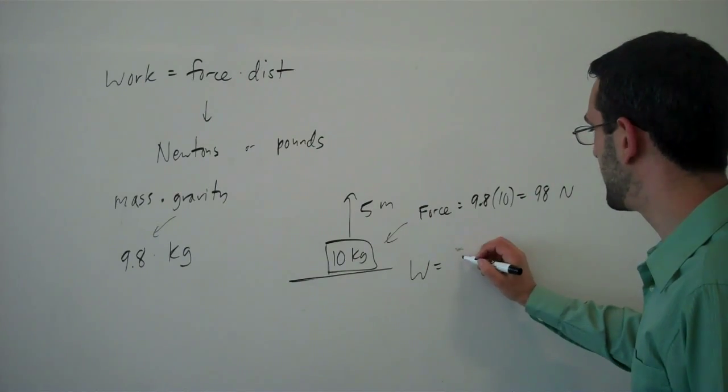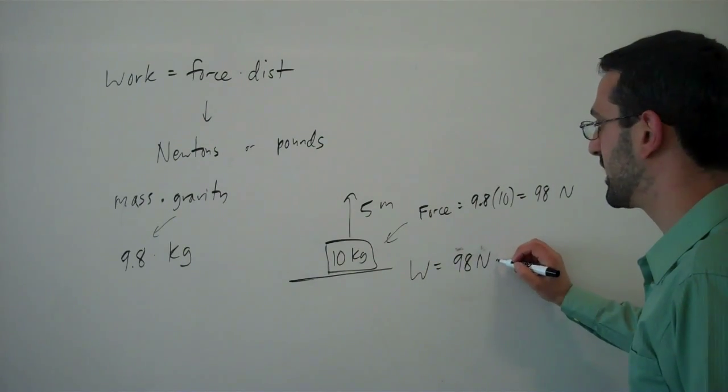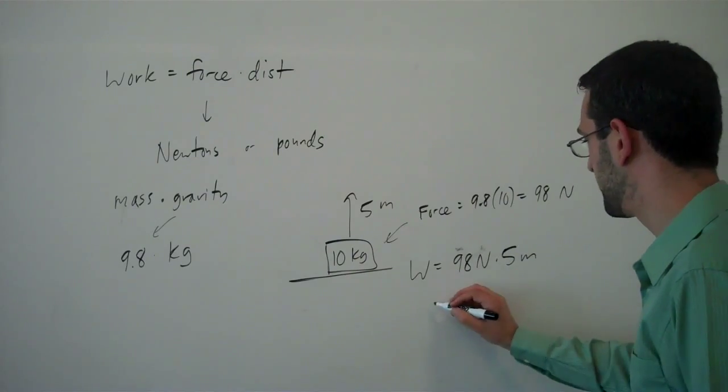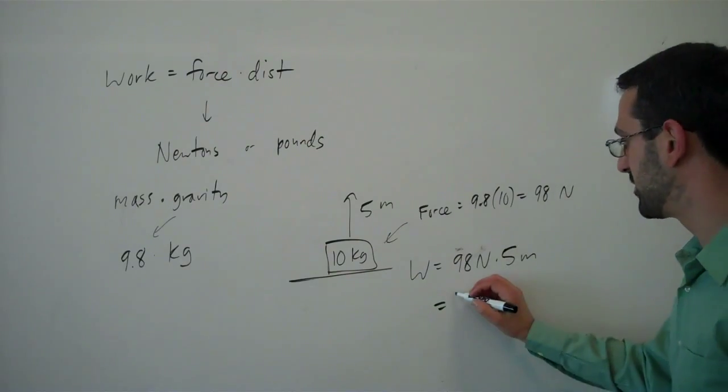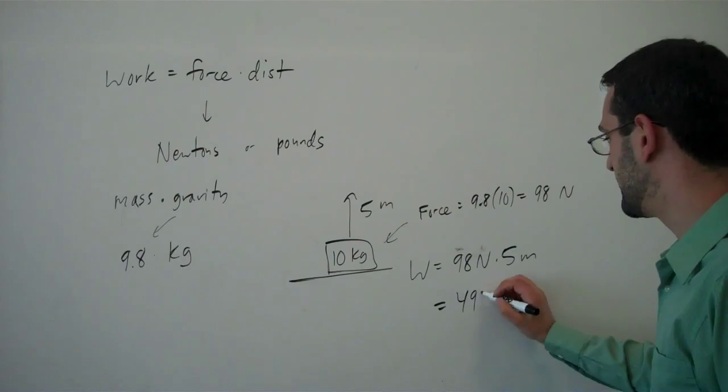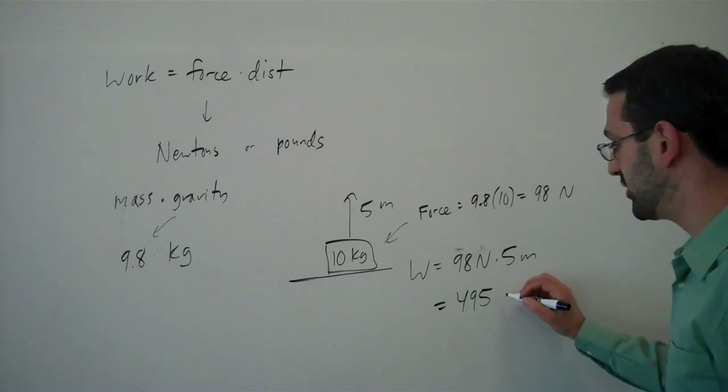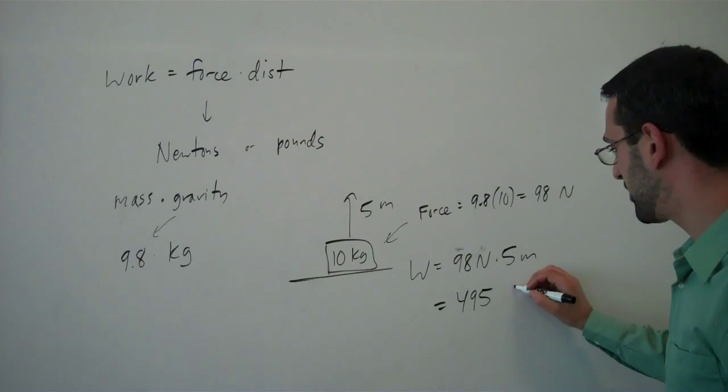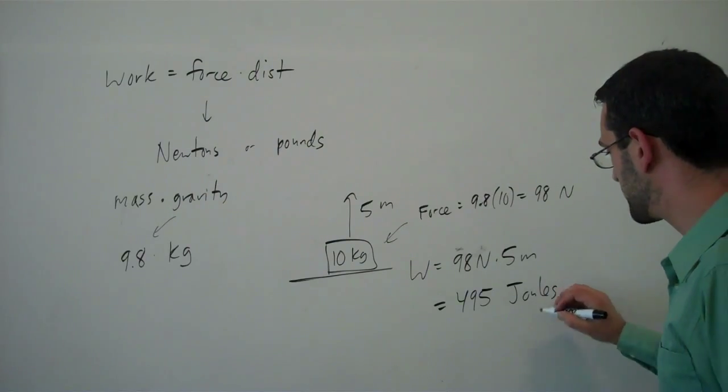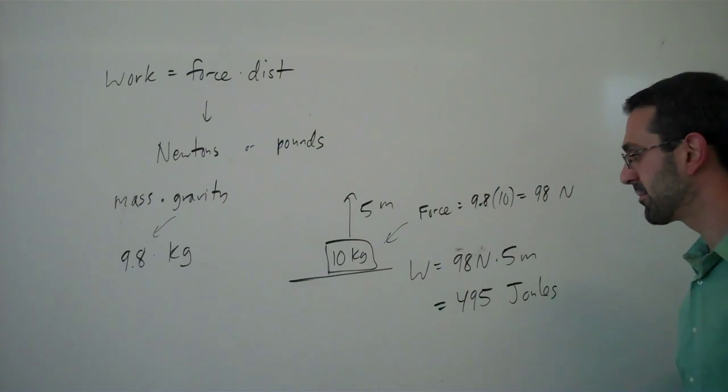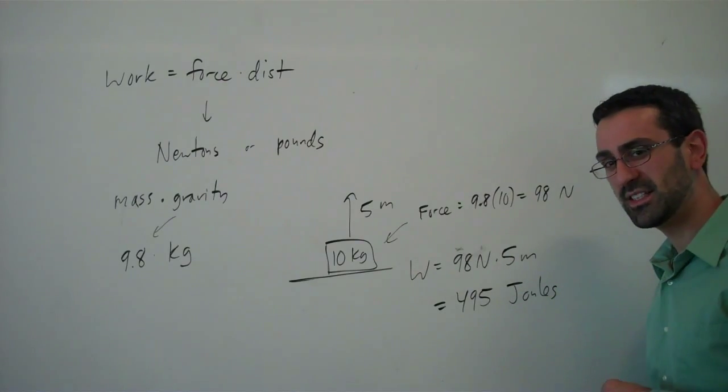Then the work would be 98 Newtons times five meters, which would be 495 Newton-meters, which are also called Joules. And that's the basic idea of work.